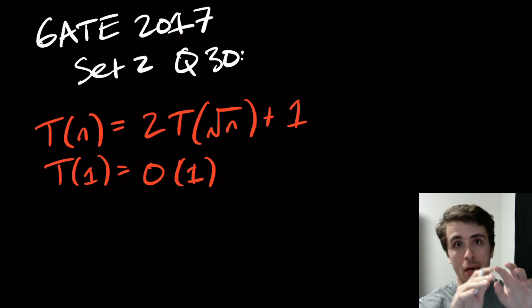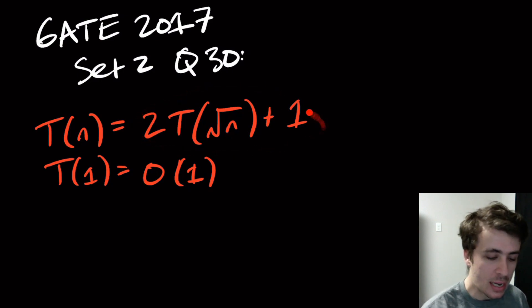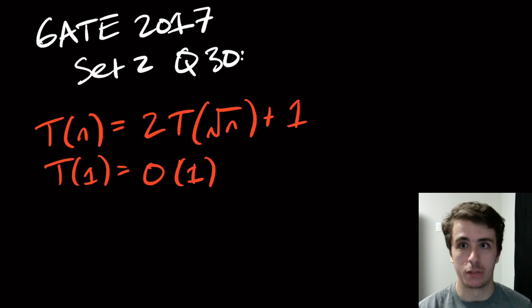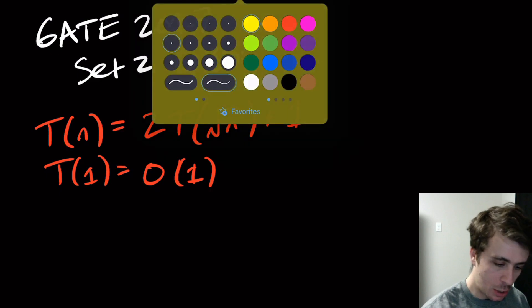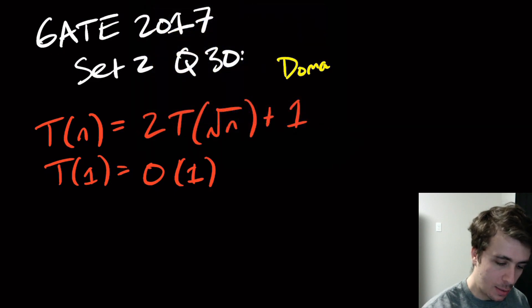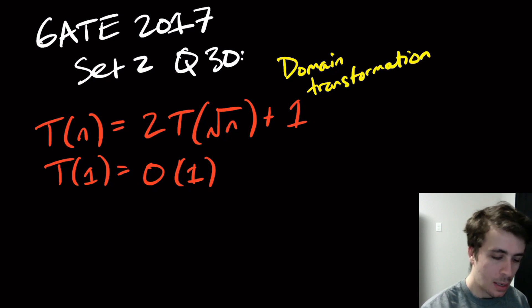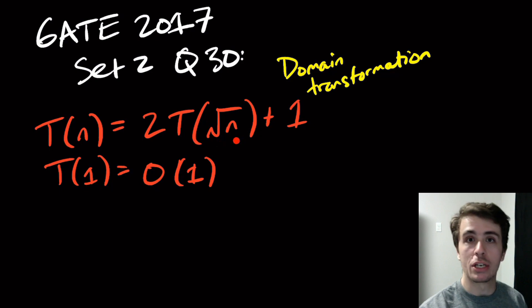We could break out our technology of looking at the recursion tree, the computation tree, and look at it directly from this perspective. But there's a different way that I want to demonstrate here where we can use the master theorem, and that is something called a domain transformation.